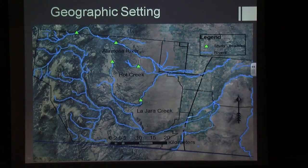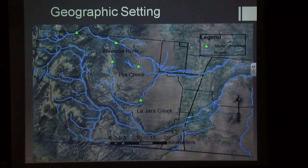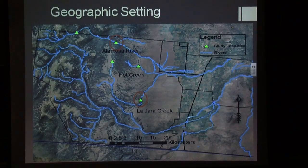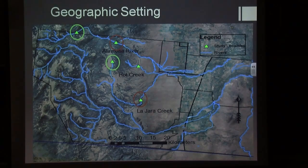Geographic setting: this is almost all in Conejos County. We're on three rivers — the Alamosa River, Hawk Creek, and Lajara Creek — with five different localities we've worked at over the years. The lower Alamosa and lower Hawk Creek localities are kind of old news. Through this talk we're going to look at Treasure Creek, our upper locality on the Alamosa River, our upper locality at Lajara Creek, and Hawk Creek, which we expanded a lot this past summer.